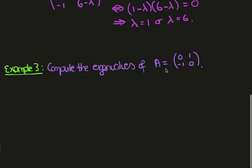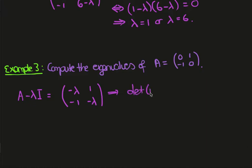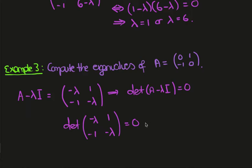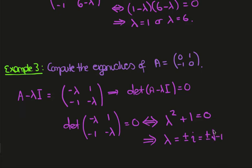Let's look at one last example. Here we have the matrix [0, 1; -1, 0]. So A minus lambda I is going to be [-lambda, 1; -1, -lambda]. Taking the determinant of A minus lambda I equal to 0, we get lambda squared plus 1 equals 0, and this says that lambda is plus or minus i, where i is the square root of minus 1.